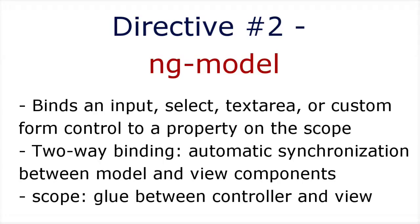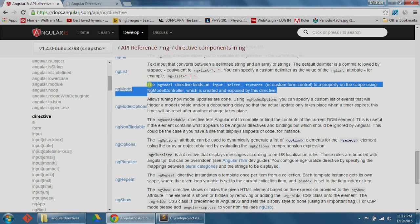Directive number two: ng-model. According to the website, the ng-model directive binds an input, select, textarea, or custom form control to a property on the scope. Angular uses two-way data binding, which is basically the automatic synchronization of data between the model and view components. Scope is basically the glue between the application controller and the view — our view is our index.html file. Let's look at one example of how to use data binding with ng-model, and then when we get to the ng-controller directive, we'll come back to try another example.